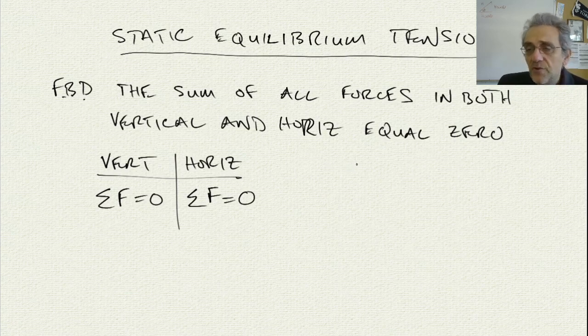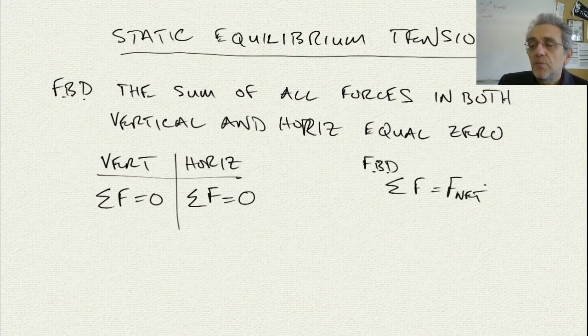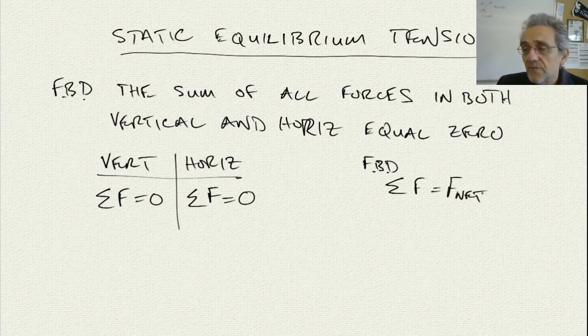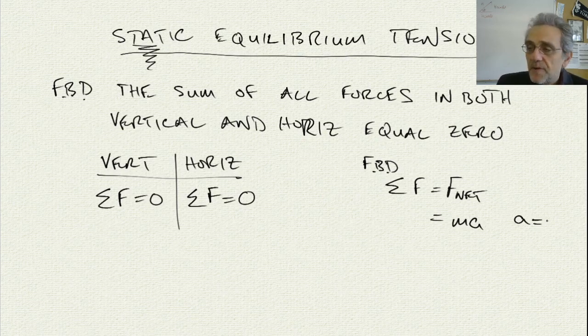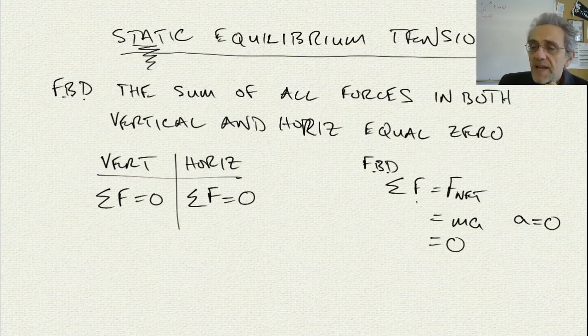The reason for this, usually when we draw a free-body diagram, we write the equation summation of the forces equals F_net, which equals MA. But we know that for statics, for things that are not moving, A must equal zero. Therefore, MA equals zero. That's where I get this equation from here. This is only for static problems.